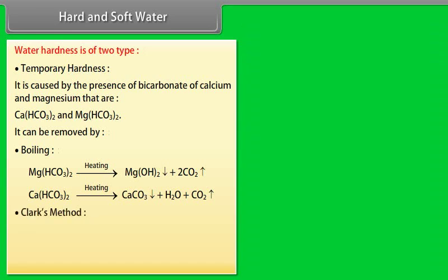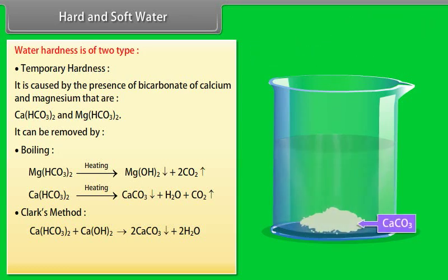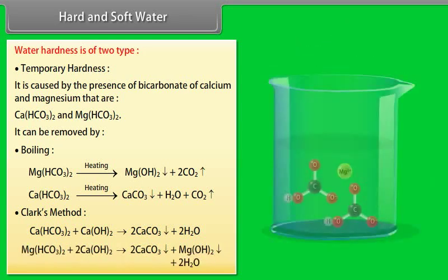Clark's method: When calculated quantity of lime is put in, it causes precipitation of calcium carbonate.